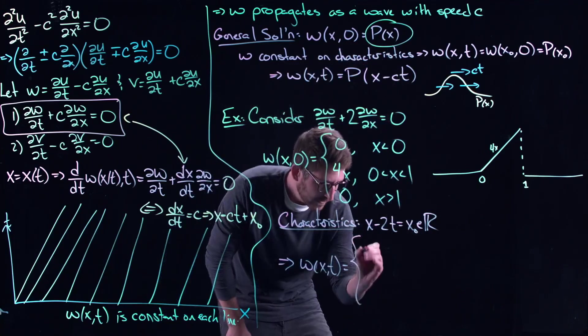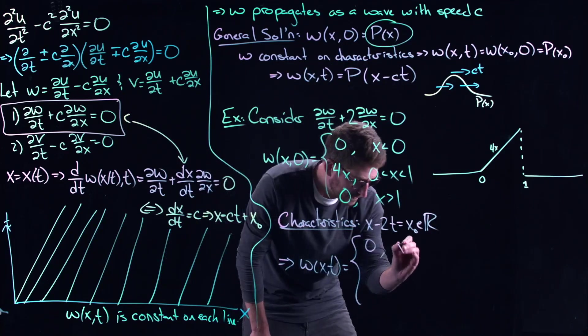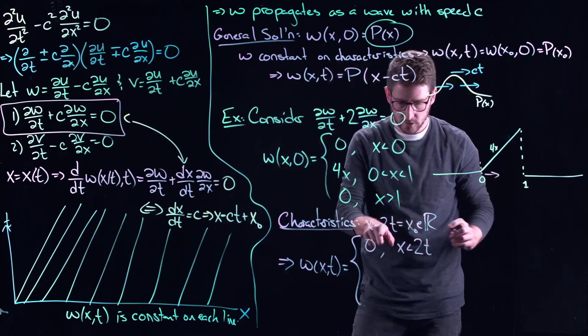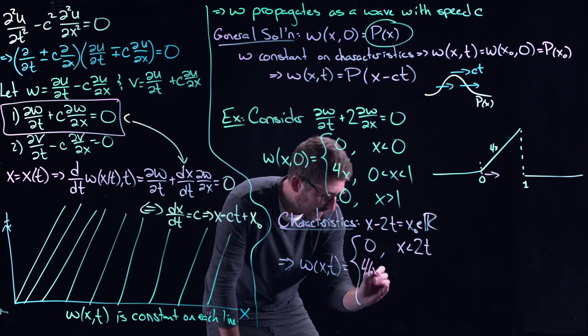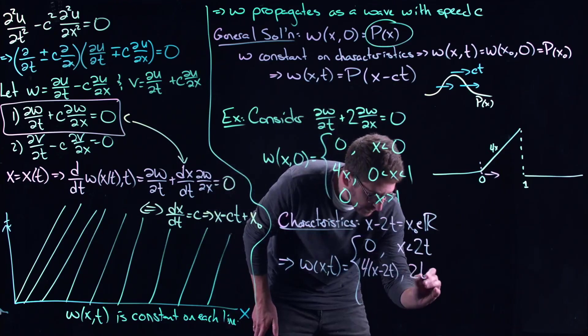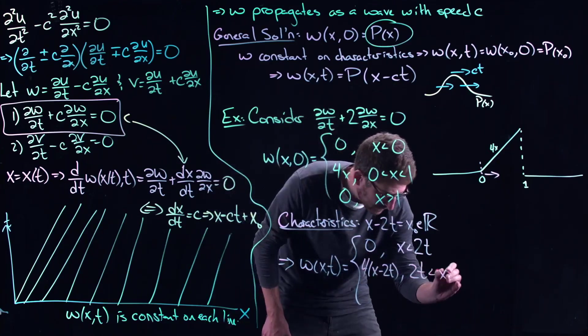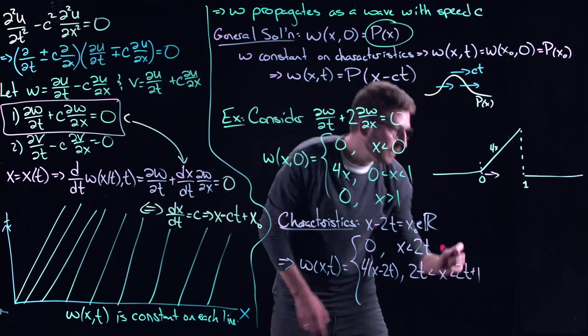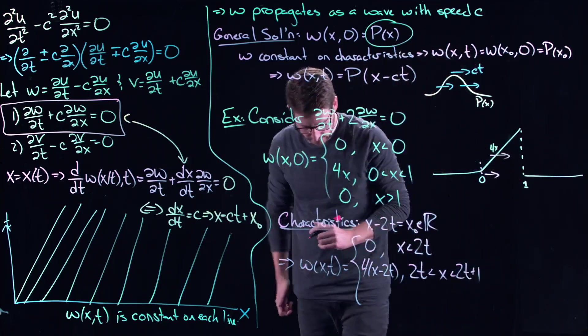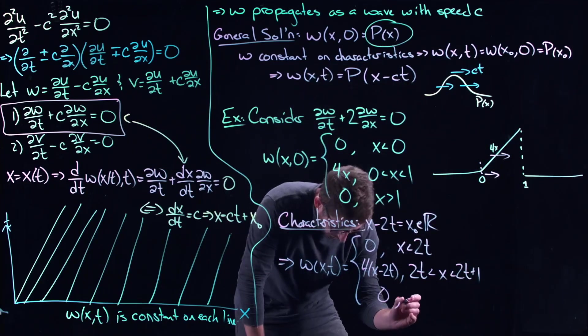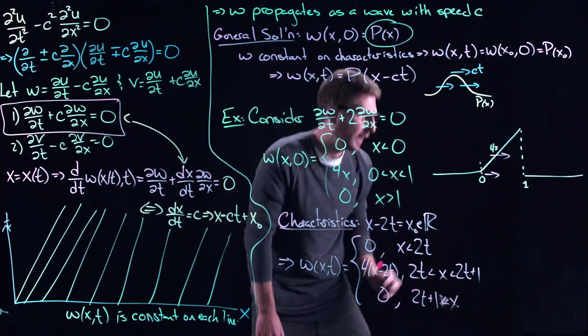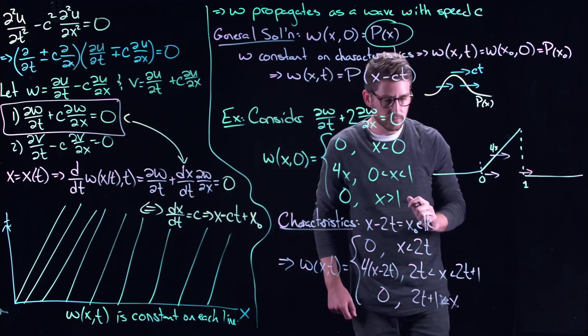So let's take a look at what this would look like. It's going to be zero when x is less than 2t. So that's just this barrier sort of moving at the speed 2t. Then it's going to be 4 times x minus 2t when 2t is less than x, which is less than 2t plus 1. That's just this whole profile moving, this little wedge piece moving with it. And it's going to be zero beyond that outer extreme, this 2t plus 1 is less than x. And that's just this rightward edge moving to the right.